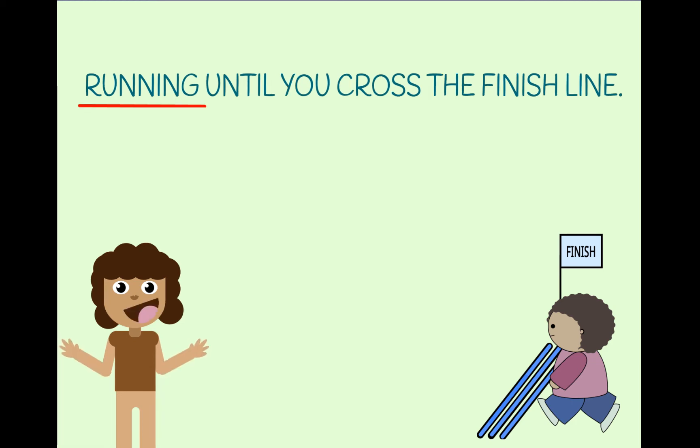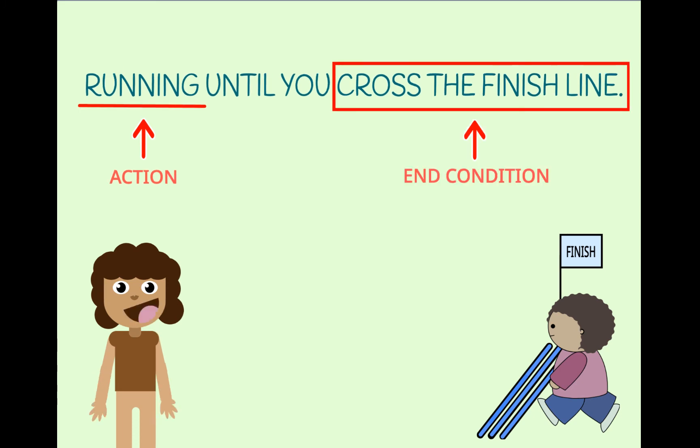In this example, the action is running. The sprite is running in a race. He runs until he crosses the finish line. Then he stops. Crossing the finish line is what causes him to stop running.